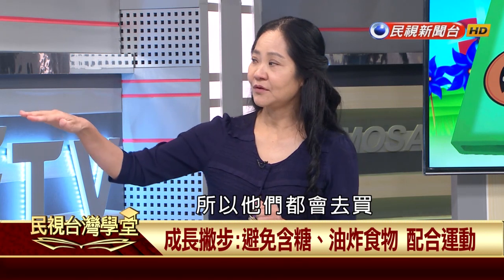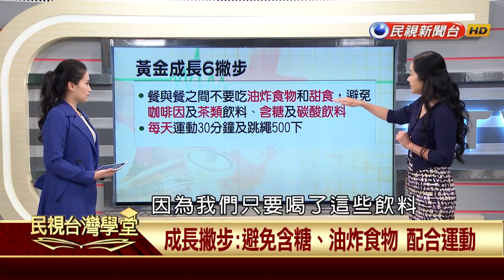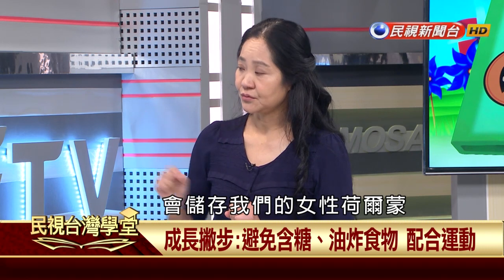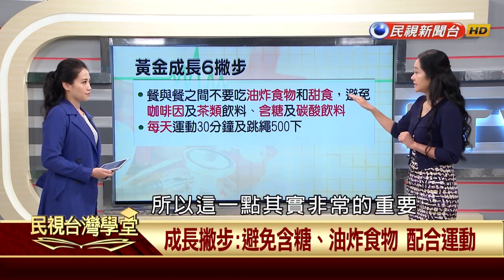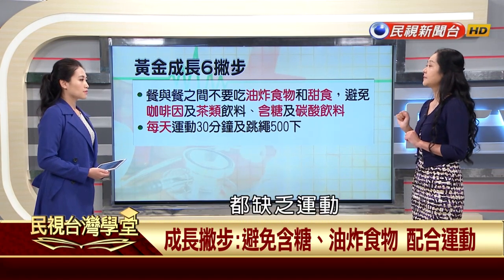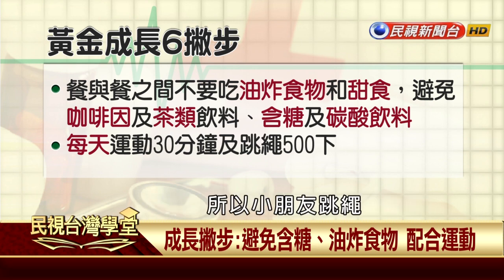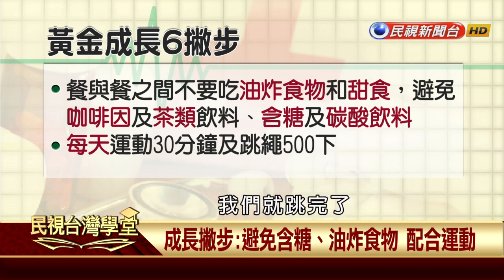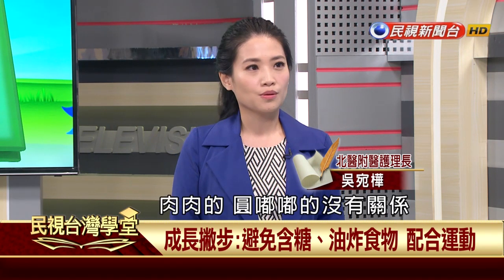除了均衡飲食，強調一個非常重要觀念：餐與餐之間絕對不要碰油炸食物和甜食。台灣孩子下課後常買鹽酥雞或珍珠奶茶，這是絕對不行的。喝飲料會變胖，變胖則生長激素作用不好，容易性早熟，儲存女性荷爾蒙。此外，要鼓勵每天至少運動30分鐘，跳繩效果非常好，500下大約只需10分鐘。